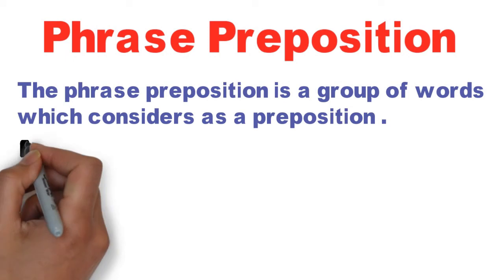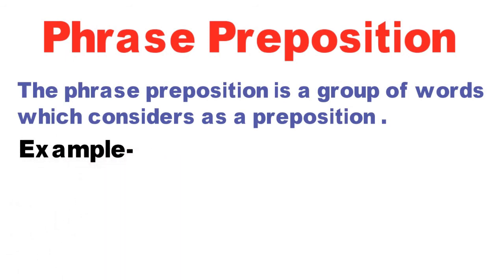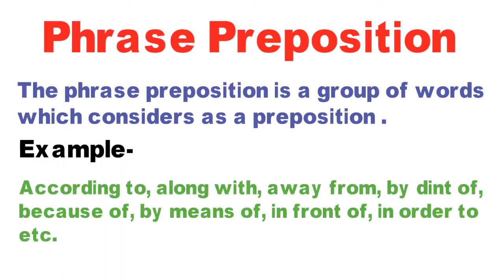Toh aiye example mein dekhte hain kaunse hote hain yeh words, jaise: according to, along with, away from, by, instead of, because of, by means of, in front of, in order to, etc. Toh yahan par yeh sabhi words phrase preposition ke examples hain, jo ki group mein likhe gaye hain.